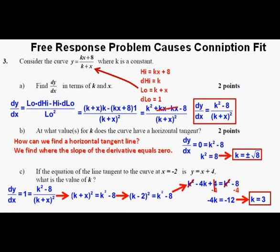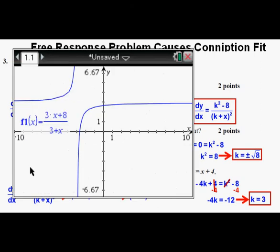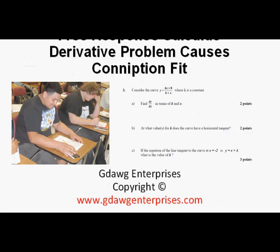Back to the calculator — here is the original function graphed using 3 for k, and here is the function y equals x plus 4 graphed on the same plane. You can see that the functions touch or intersect at x equals negative 2, verifying Part C. The function y equals x plus 4 is a tangent to the original function where k equals 3. This has been Free Response Calculus Derivative Problem Causes Conniption Fit. Thanks for viewing.